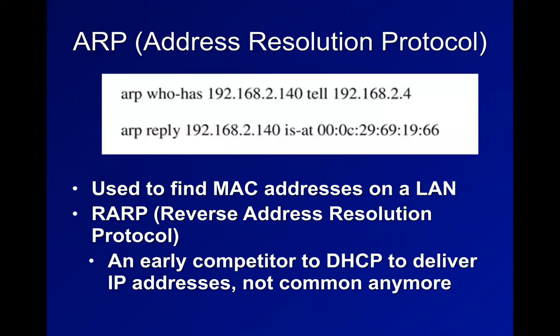ARP is used to resolve IP addresses down to MAC addresses. You typically configure an end device with a default gateway, but it cannot send traffic to an IP address on a local area network without a MAC address, so it uses ARP to resolve an IP address down to a MAC address. This is why most network traffic is ARP traffic.